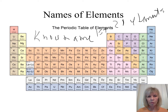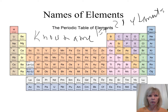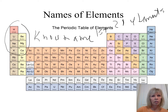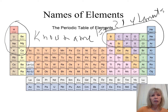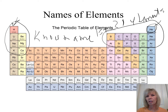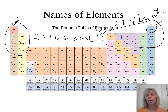The exam periodic table won't have element names written in. You need to remember elements 1 through 20. Some commonly known ones: H (hydrogen), He (helium), lithium, beryllium, boron, carbon, nitrogen, oxygen, fluorine, neon, and so on. Any element beyond number 20, if I give you the symbol, I'll also tell you the name.